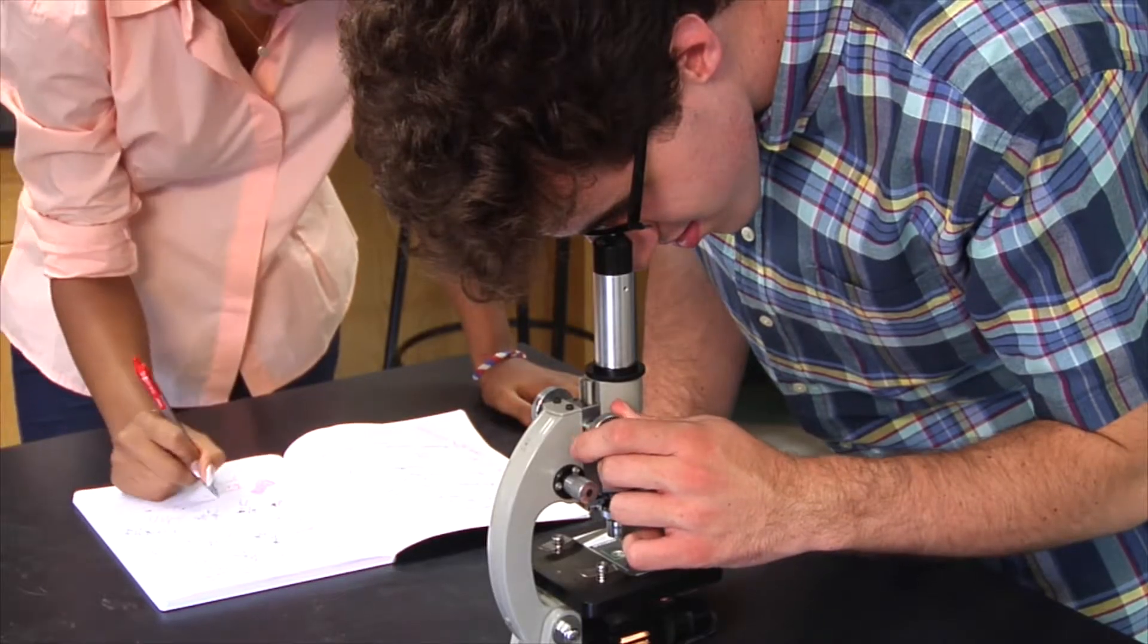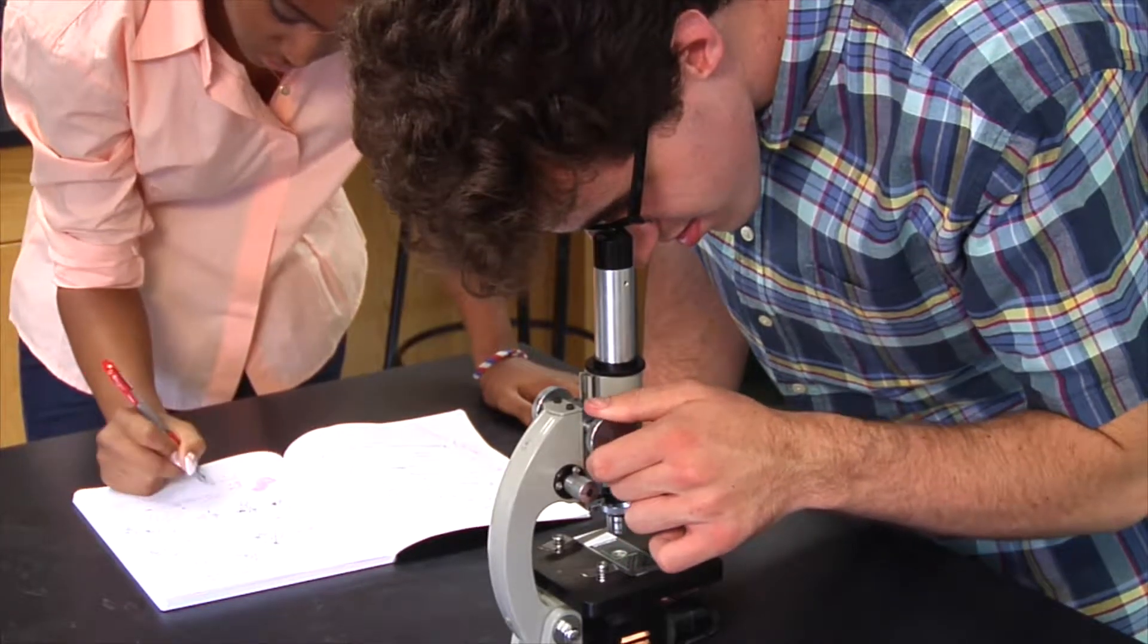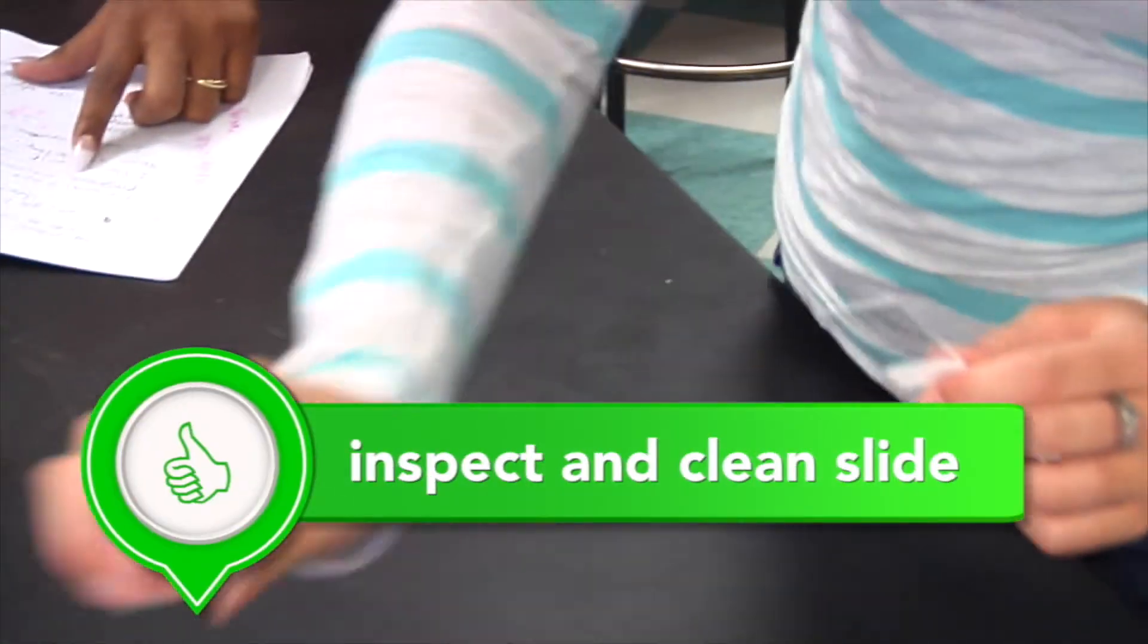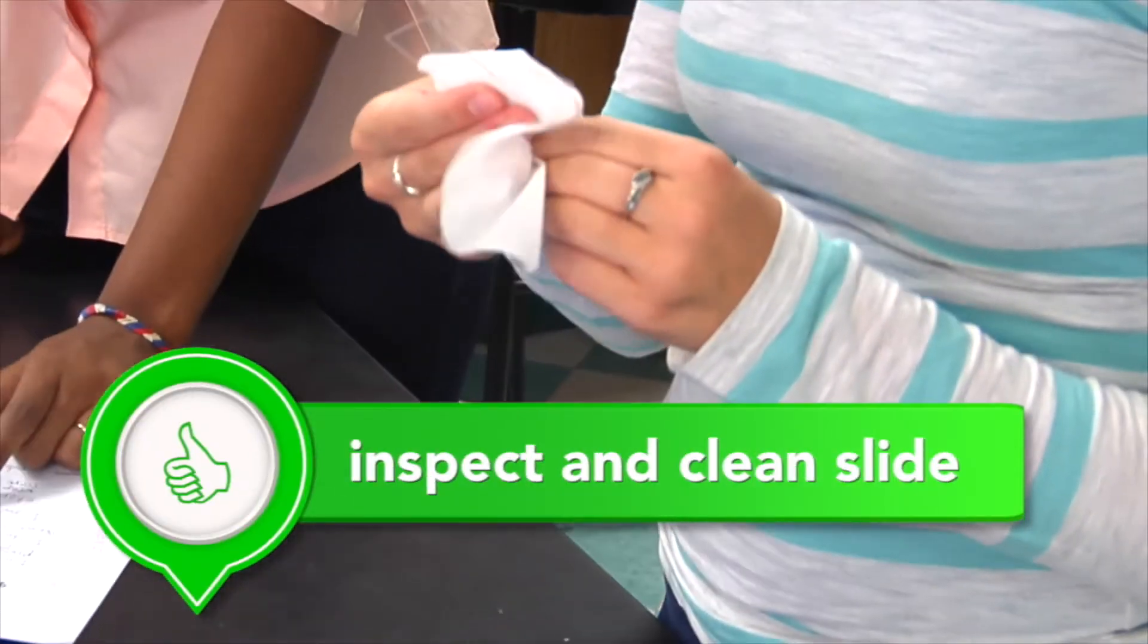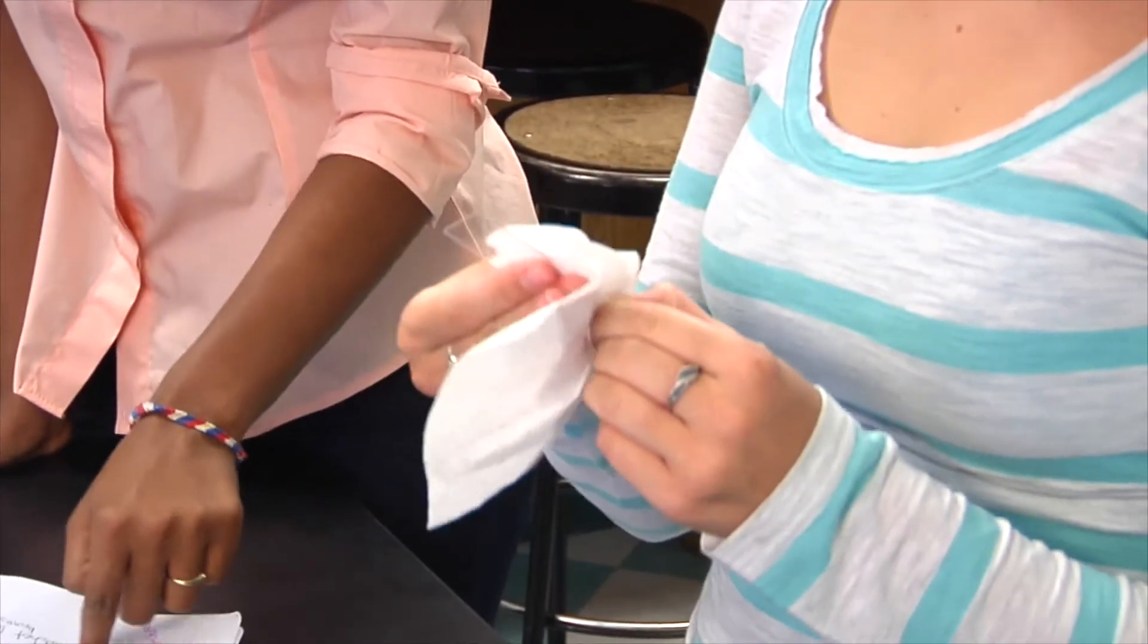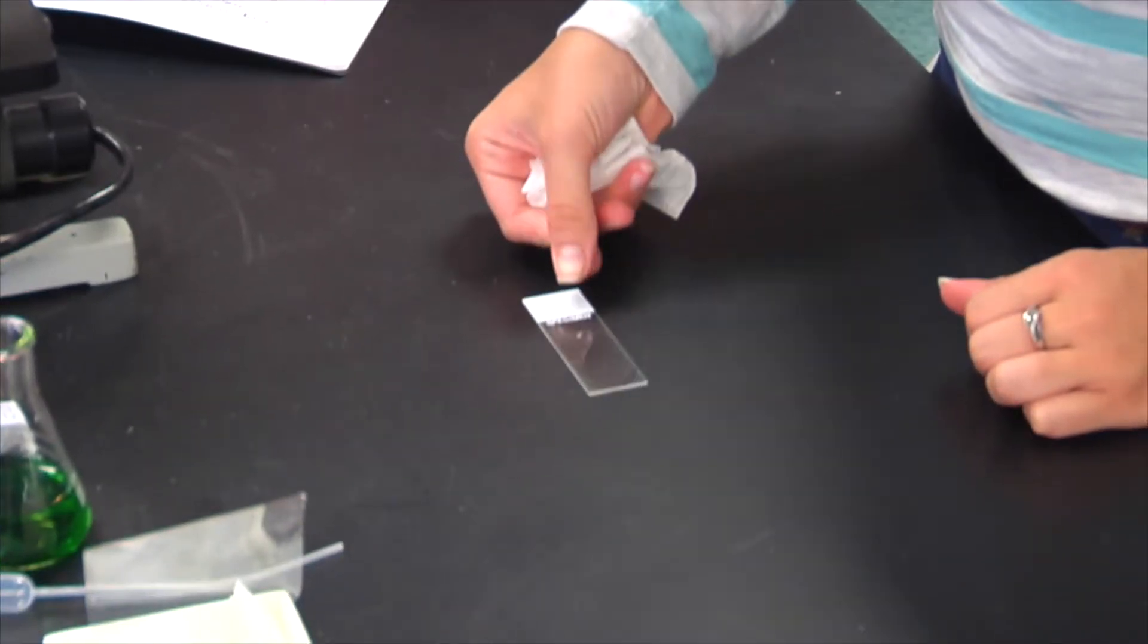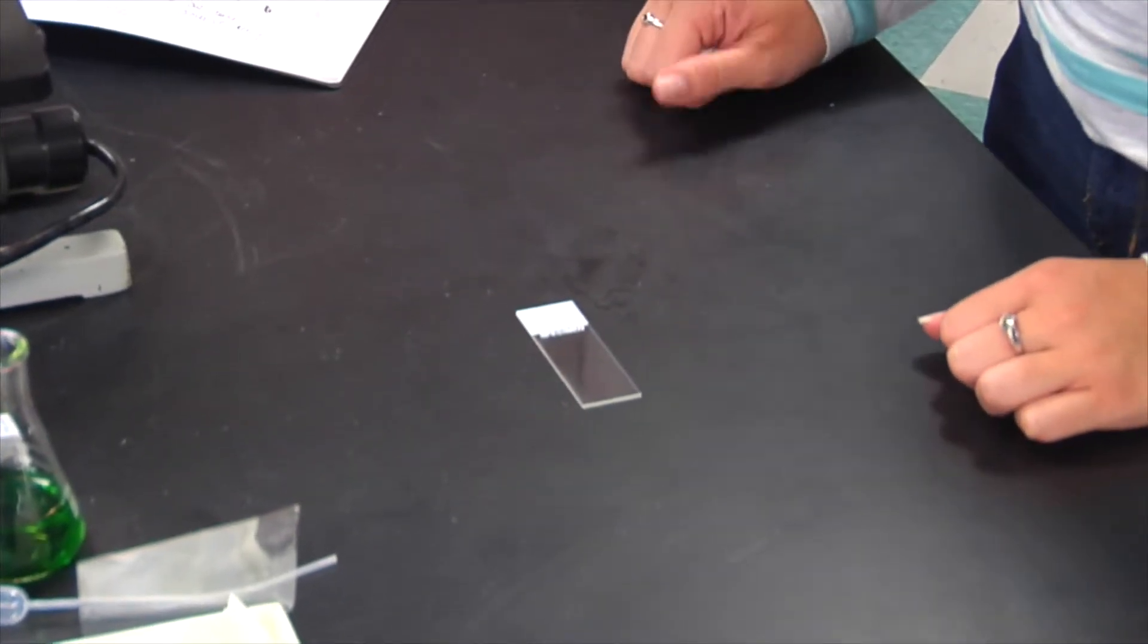First, let's consider how to prepare a microscope slide properly. Take a glass microscope slide from its box and inspect it for fingerprints or other debris. You pick up a slide by its sides to avoid putting fingerprints on it. If the slide is not perfectly clean, dirt or debris can interfere with the viewing of the specimen.